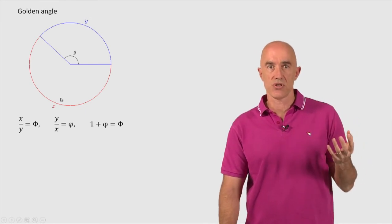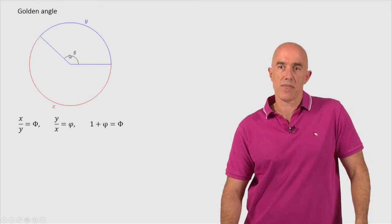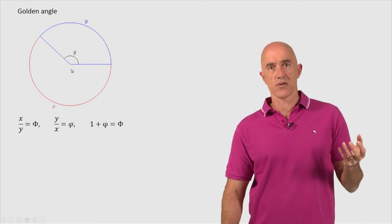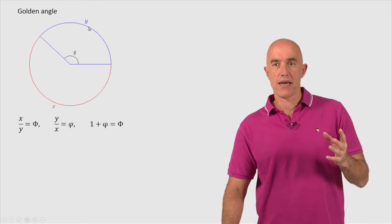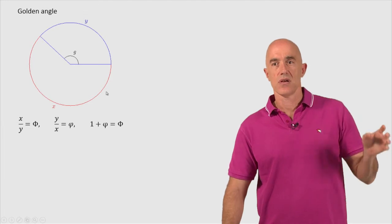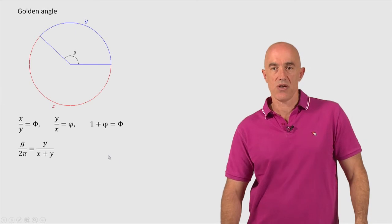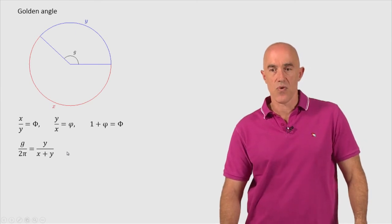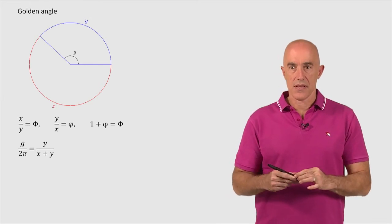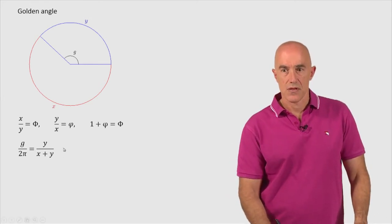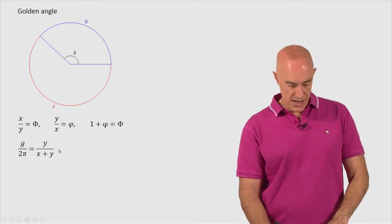And what about the golden angle, g? Well, this angle g divided by the full angle of the circle, 2π, should be equal to the arc lengths, y divided by the full arc length of the circle, which is x plus y. So g over 2π is equal to y over x plus y.